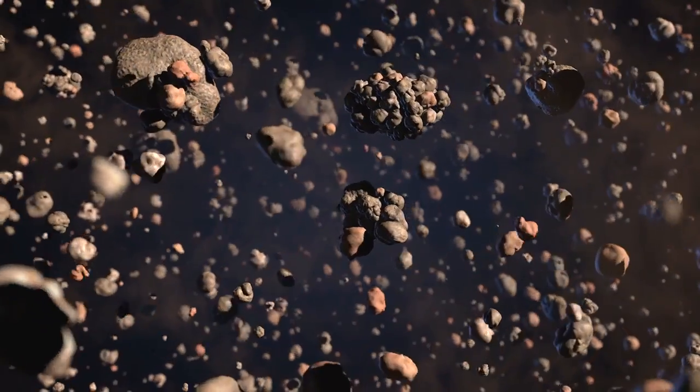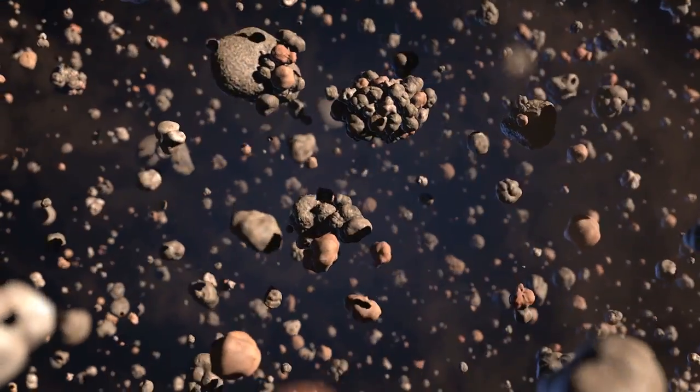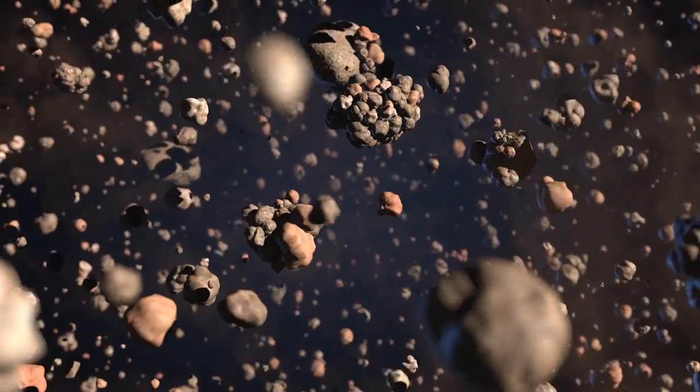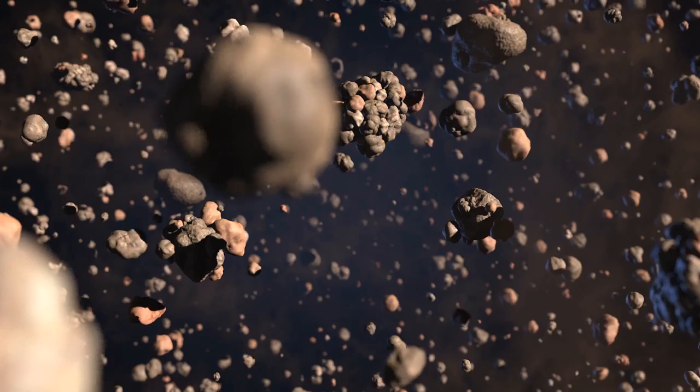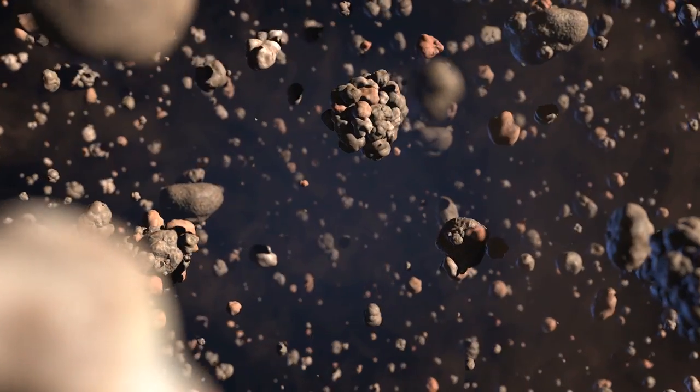Computer models suggest that dust grains grow by colliding and sticking together. However, when the bigger grains collide again at high speed, they are often smashed to pieces and sent back to square one.